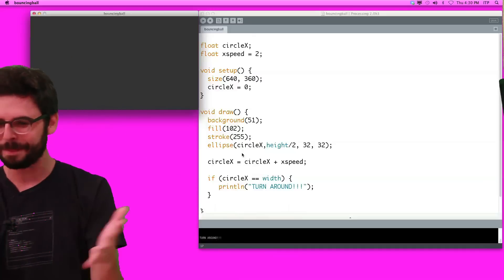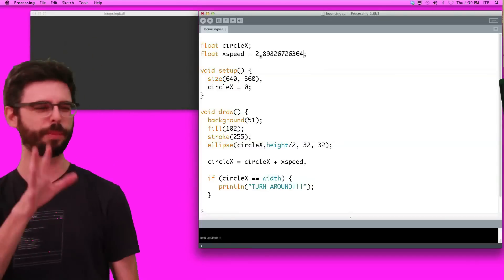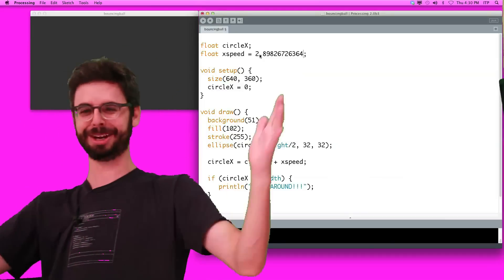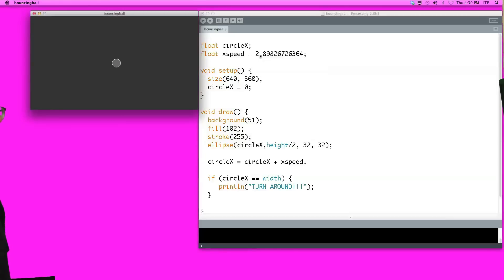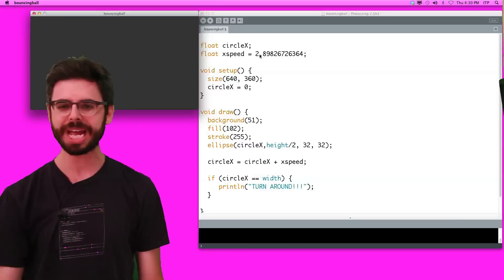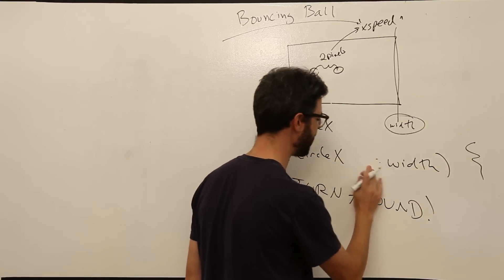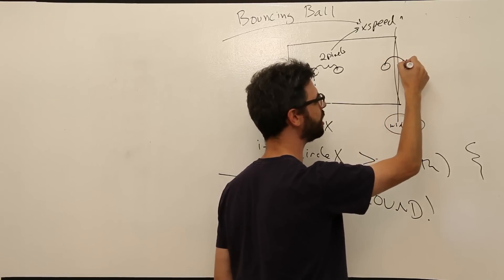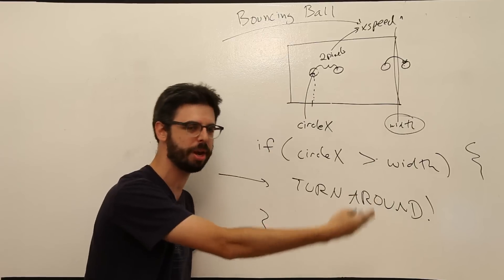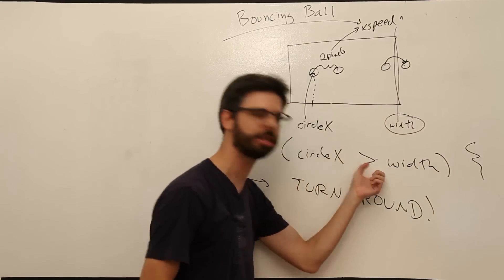But what's the problem with this statement? If I set x_speed to something like 2.89, this becomes really important. When we run it, nothing prints out. Why? Because adding 2.89 repeatedly won't land exactly on 360 pixels. A much better approach is to say if circle_x is greater than or equal to the width. That way, if it jumps past the edge in one frame, we still register it. Greater than is going to be much better than equals here.